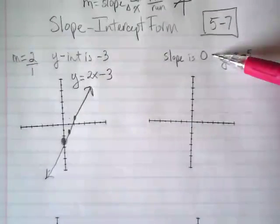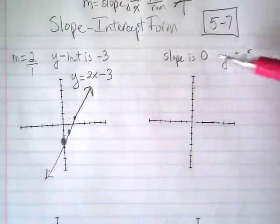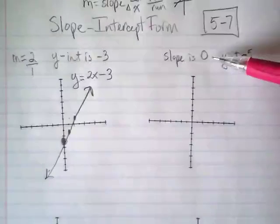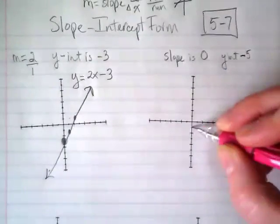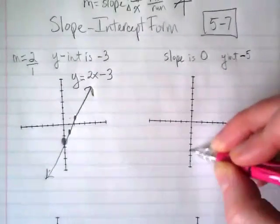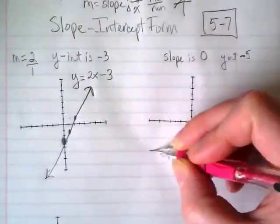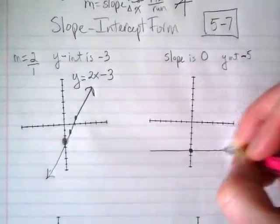What's the slope? 0. So it's not undefined. It's 0. So we're going to go down to negative 5. And we're just going to have a 0 slope going straight across.